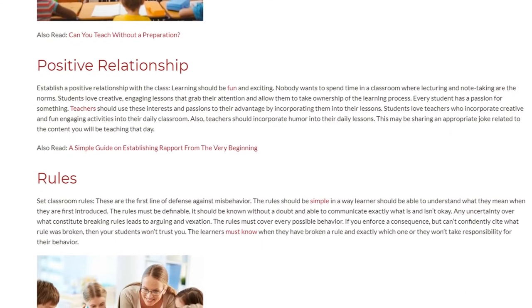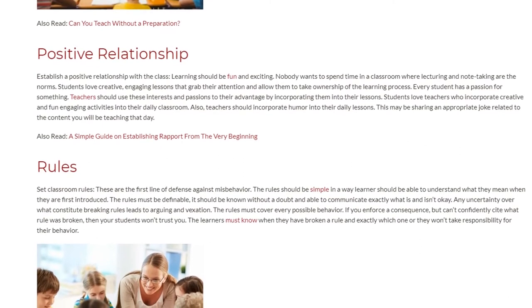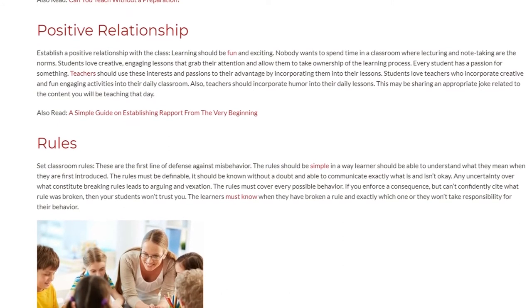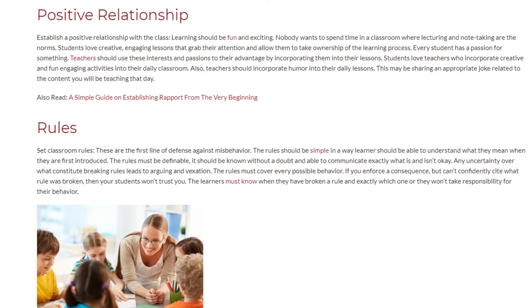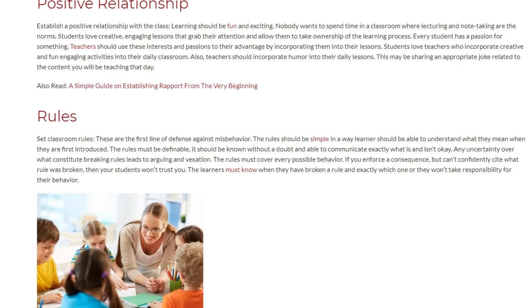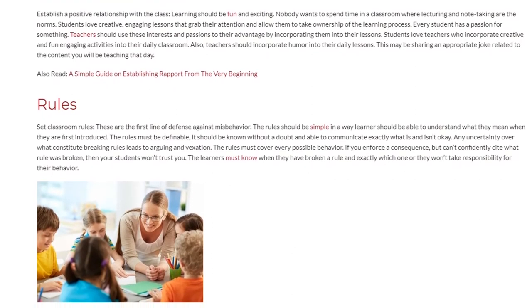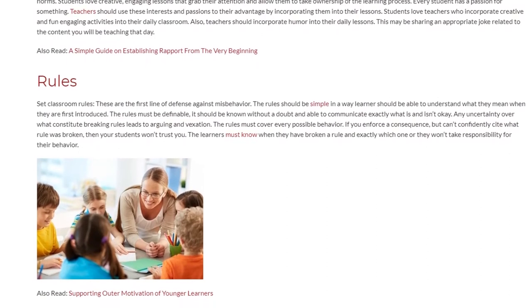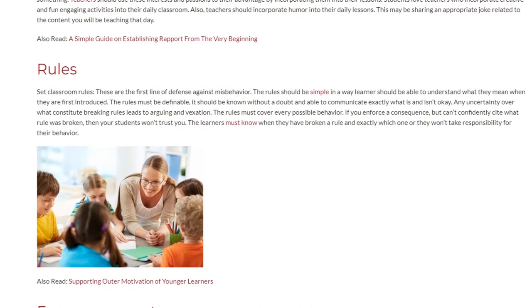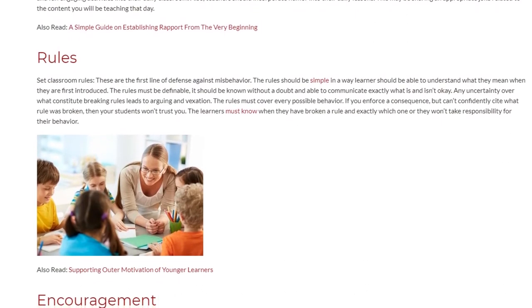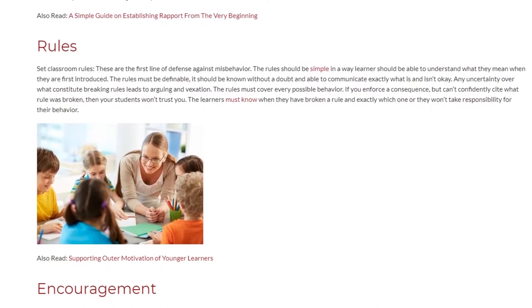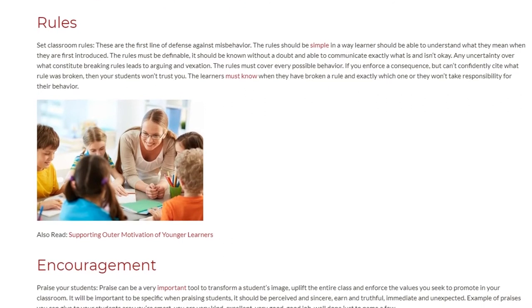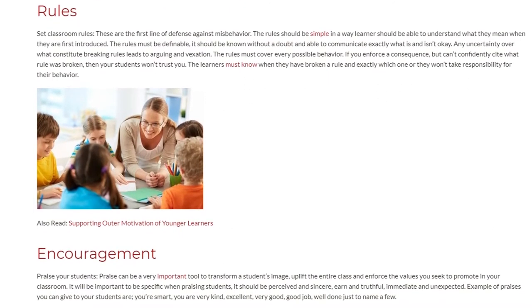Set classroom rules. These are the first line of defense against misbehavior. The rules should be simple so that learners understand what they mean when first introduced. The rules must be definable — it should be clear exactly what is and isn't okay. Any uncertainty over what constitutes breaking a rule leads to arguing. The rules must cover every possible behavior. If you enforce a consequence but can't confidently cite which rule was broken, your students won't trust you. Learners must know when they have broken a rule and exactly which one, or they won't take responsibility for their behavior.